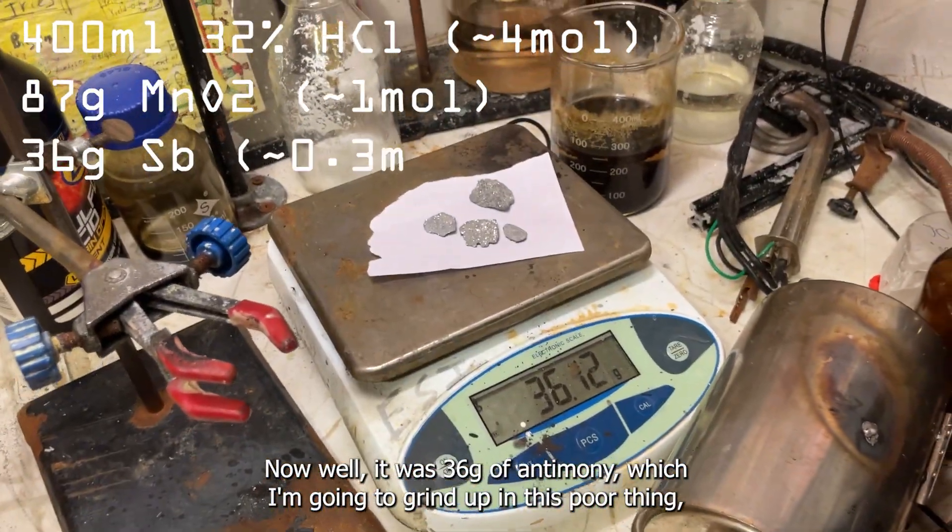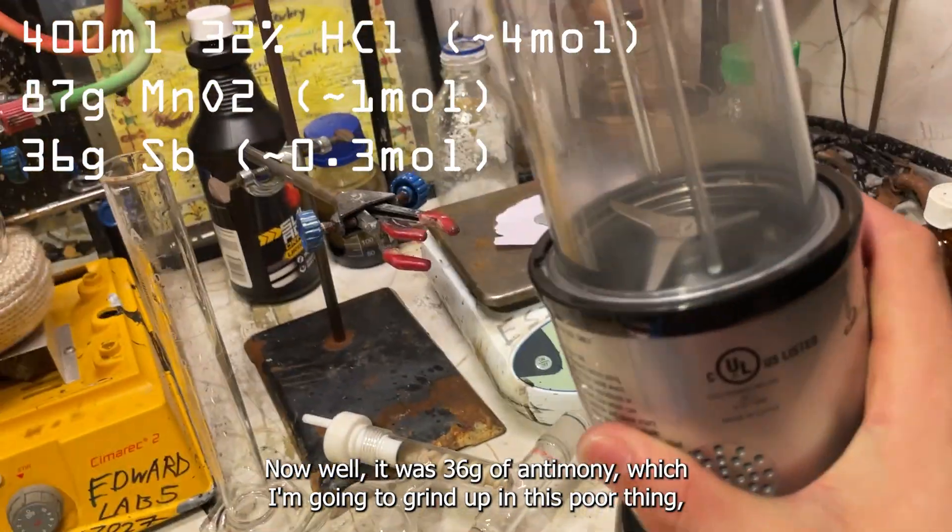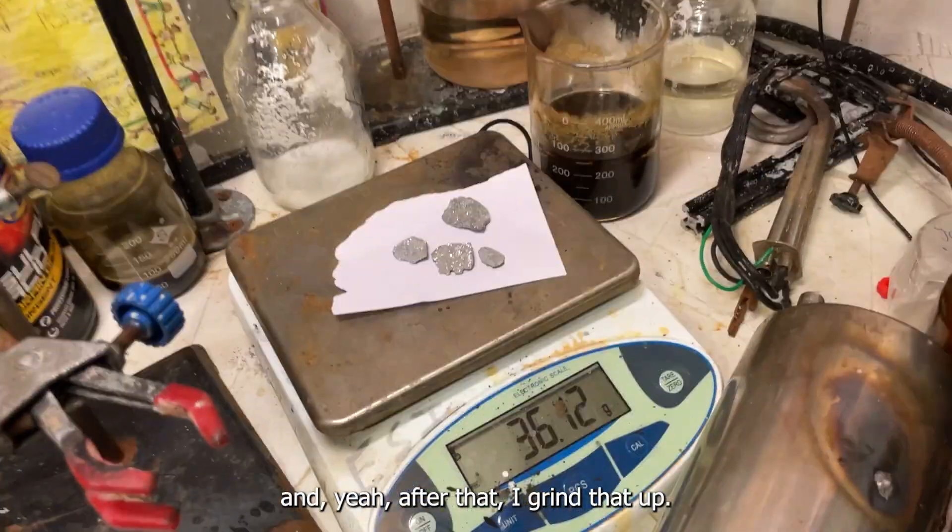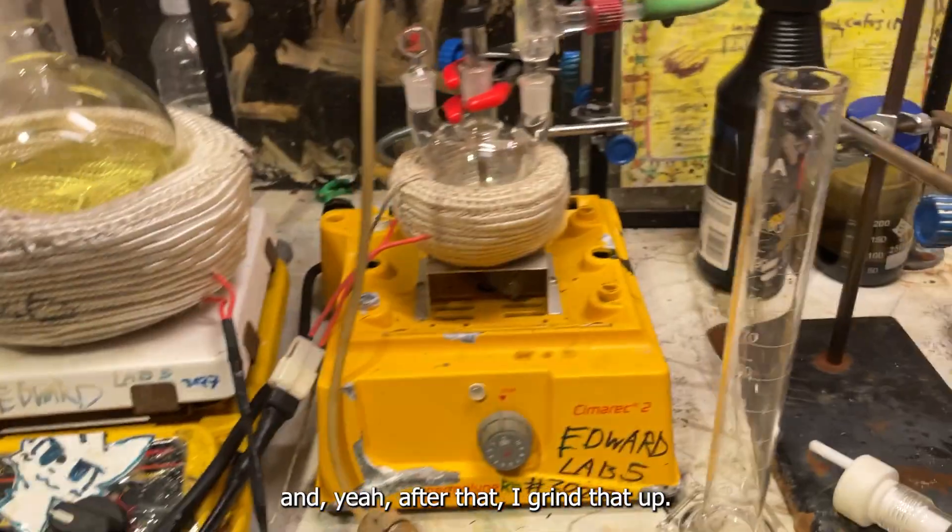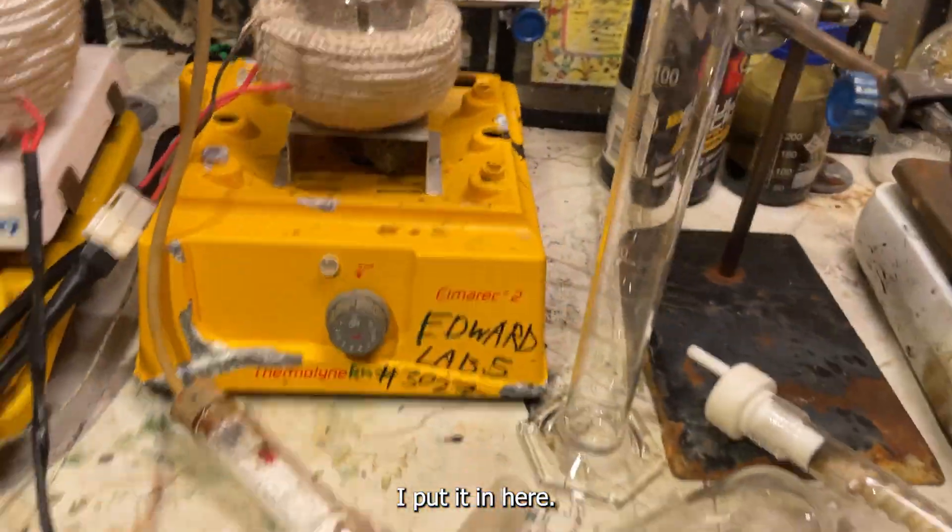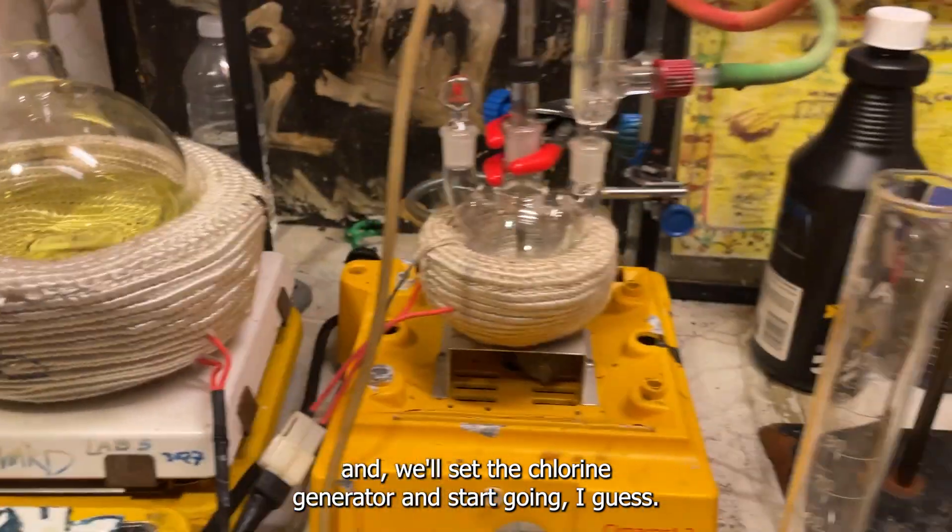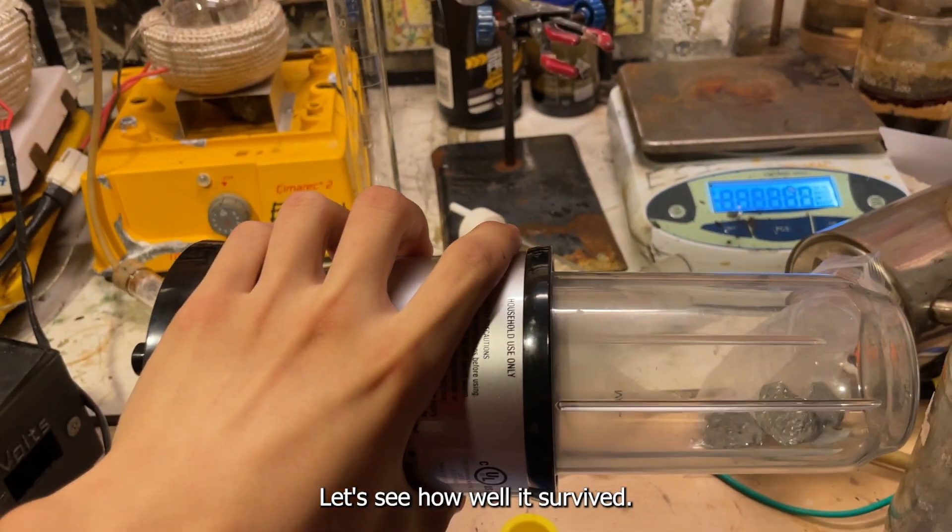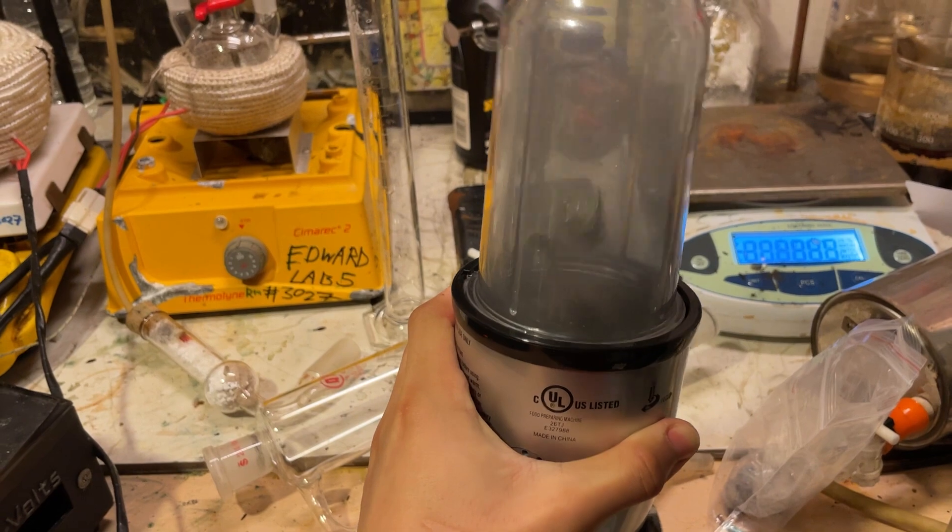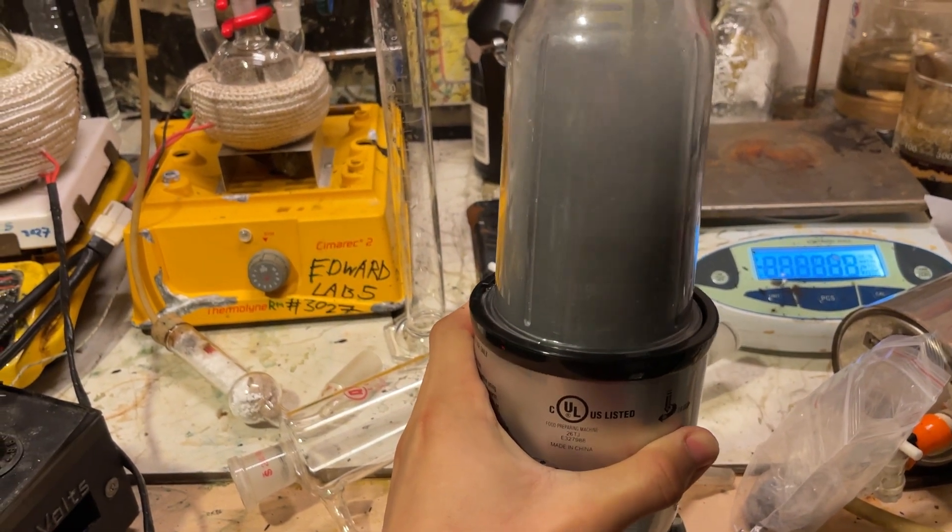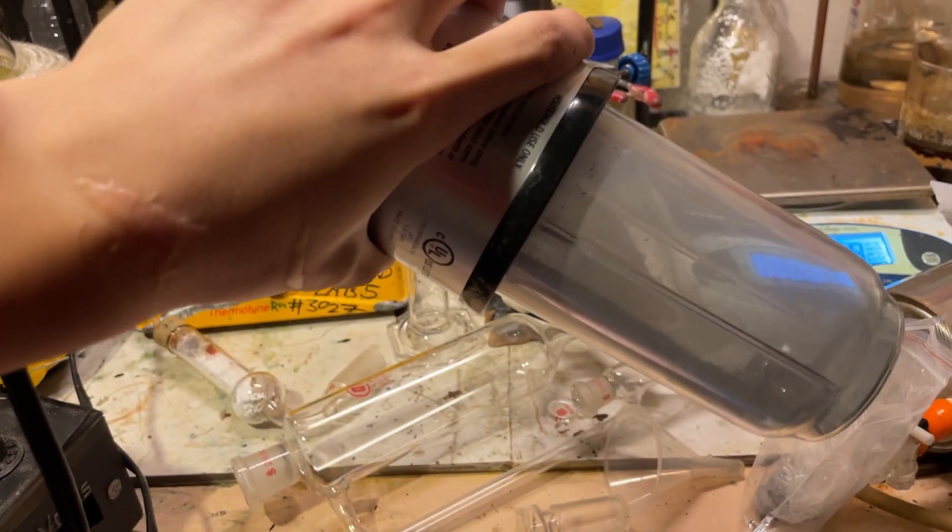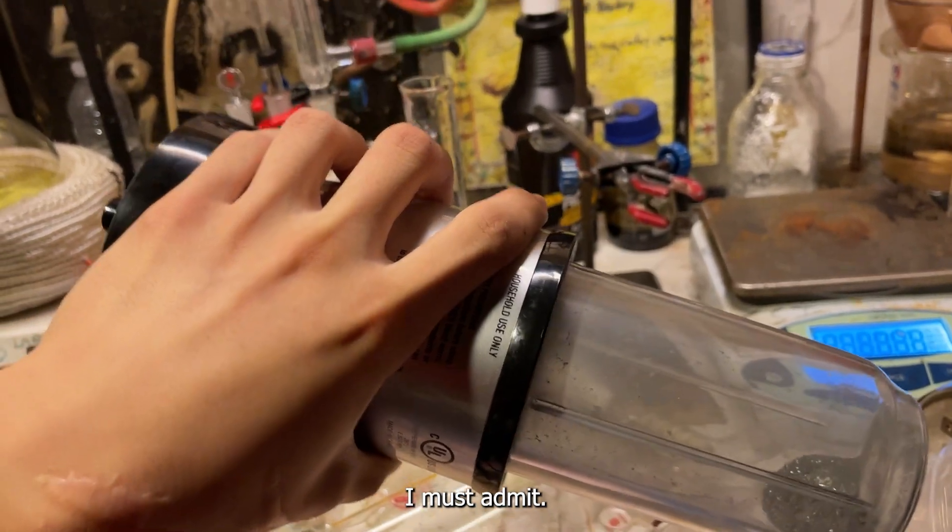Now we're going to use 36 grams of antimony, which I'm going to grind up in this poor thing to see if it survives. And after that, I grind that up, I put it in here, the flask is already preheated, and we'll set the chlorine generator and start going. Let's see how well it survives. That is quite perfect, I must admit.